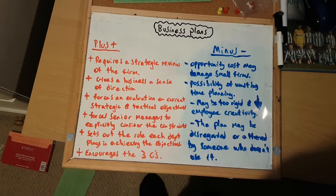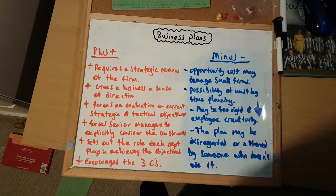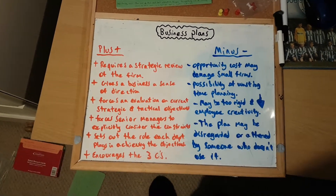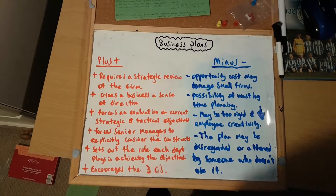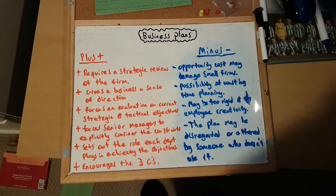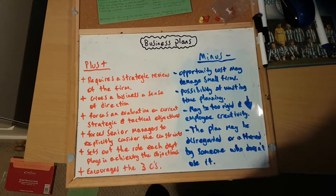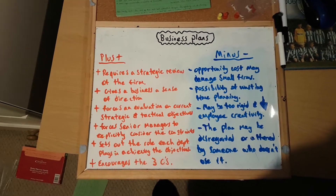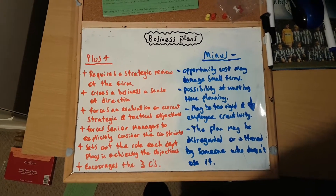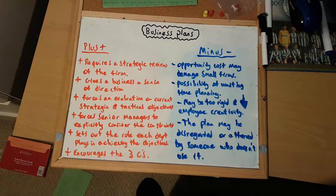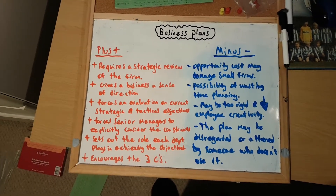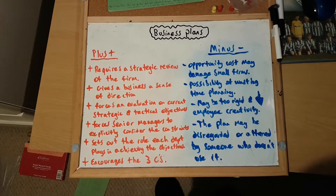It also forces senior managers to explicitly consider the constraints. So you can have objectives, but then you've got to analyse what's going to affect achieving them and how you're going to overcome that.